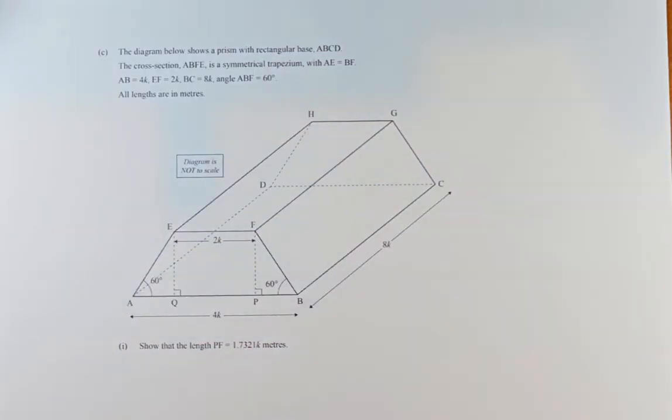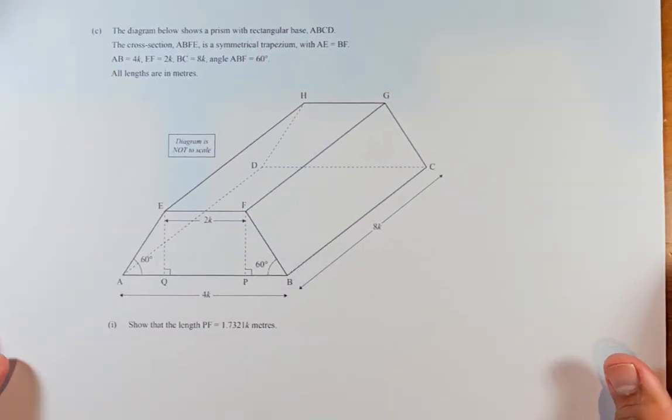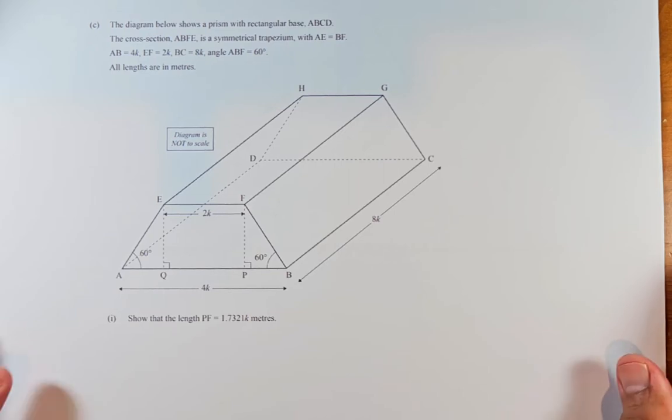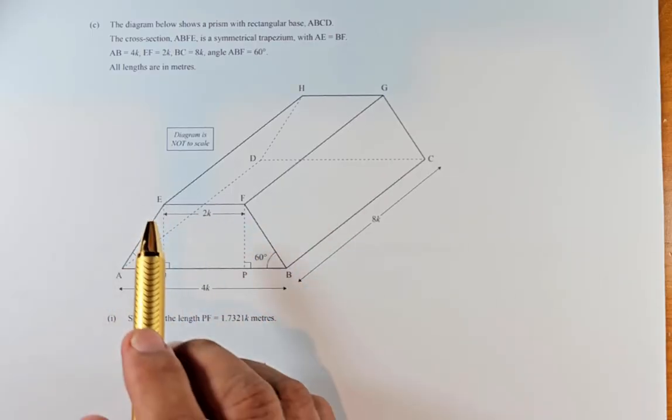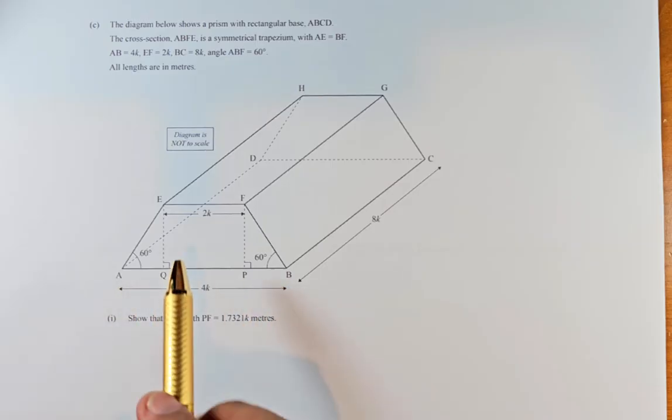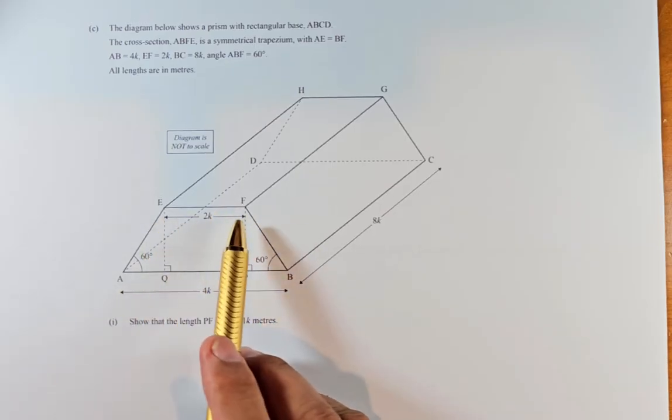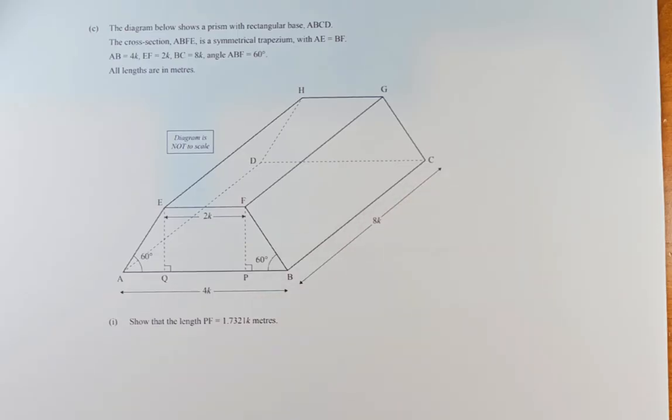The diagram below shows the prism with rectangular base ABCD. The cross section ABFE is a trapezium symmetrical with AE equal to BF, AB equal to 4k, EF is going to be equal to 2k and BC equal to 8k. Angles ABF, this angle here, is going to be 60 degrees. All lengths are in meters.